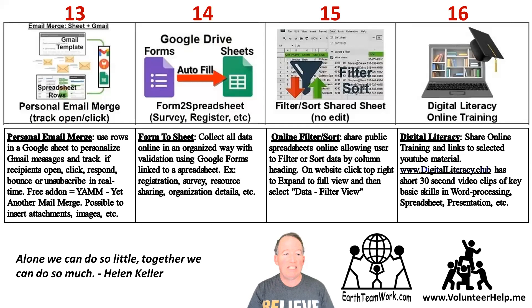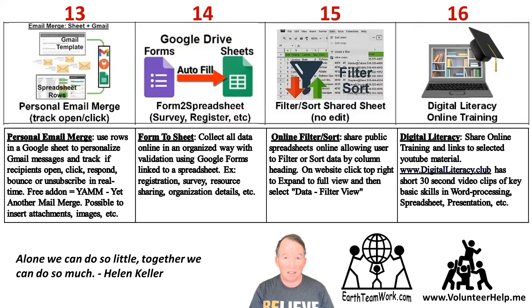Tools 13 to 16 include personal email merge, form to sheet, online filter and sort, and digital literacy. Personal email merge makes it possible to personalize your email messages — not send CC or BCCs. The individual only receives information they're interested in, and it can be tracked: did they open it, did it bounce, did they click, did they respond? A really useful tool is called YAM — yet another mail merge — and it's a free add-on to Google Gmail.